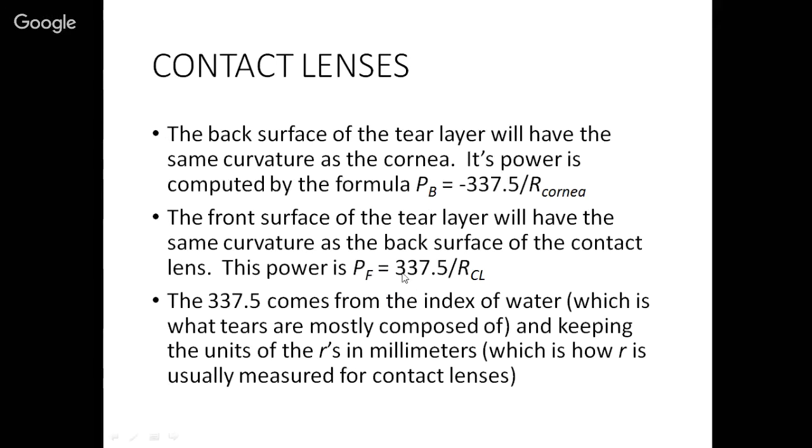To get the front, we take plus 337.5, and we divide by the radius of the back surface of the contact lens. So those are the two formulas for computing the back and the front respectively. Now, they're pretty similar, they both have radii on the bottom, so we're taking the shape of the tear layer into account. You might be wondering where this 337.5 comes from. Well, that comes from the index of water, which is mostly what tears are composed of. And it also comes from the fact that we're going to just keep the radius in millimeters, because that's how it's usually measured for a contact lens.